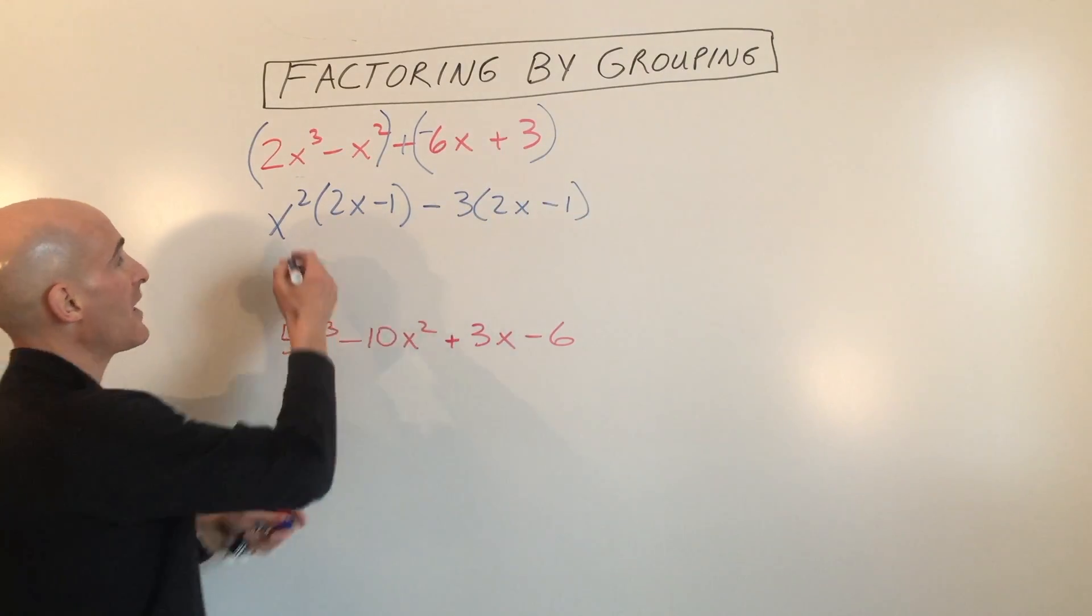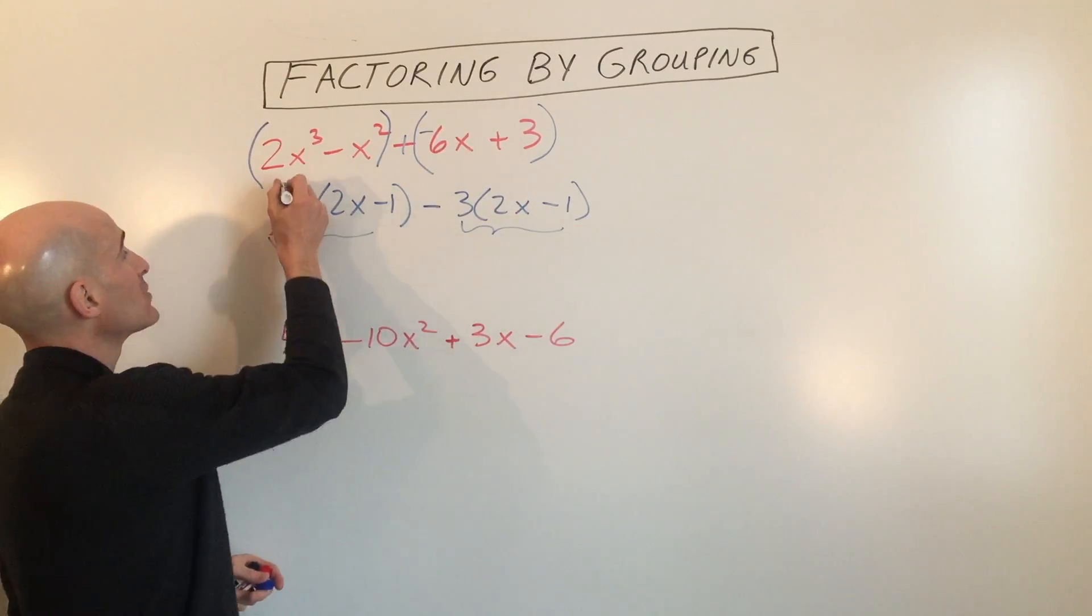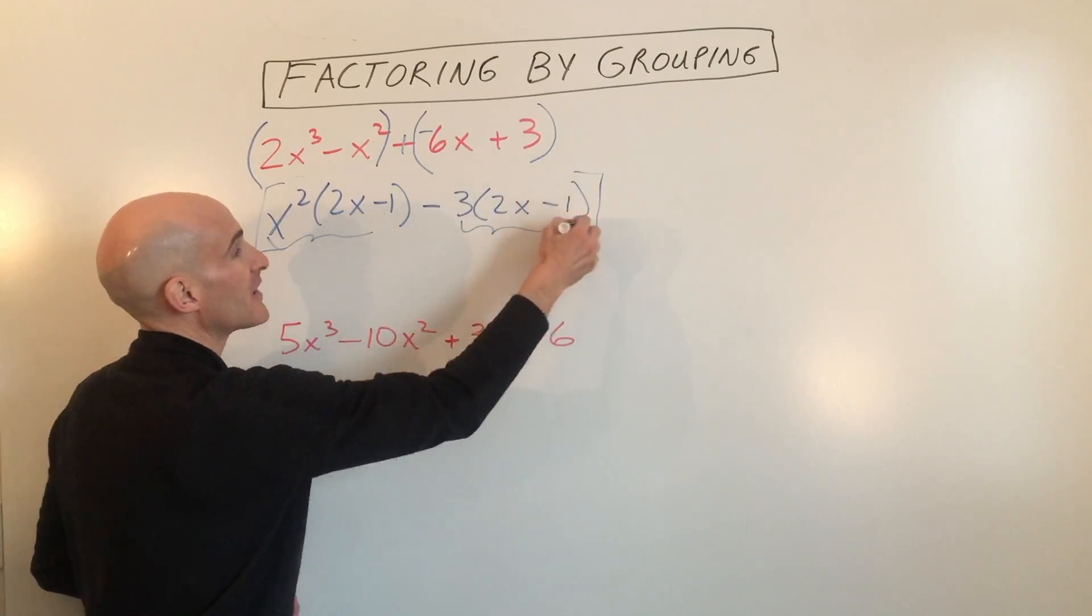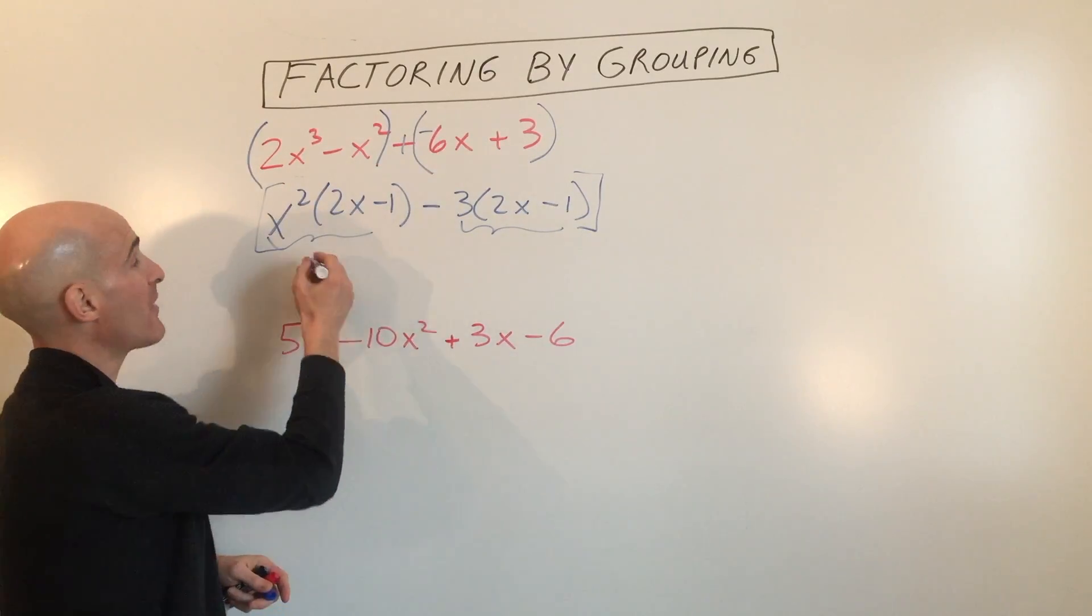Now notice how we have in this group and in this group a 2x minus 1. So what we're going to do is we're going to factor out that 2x minus 1 out of this group and this group. It's like doing the distributive property backwards.